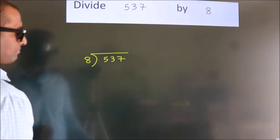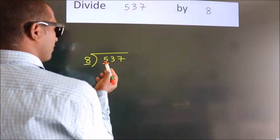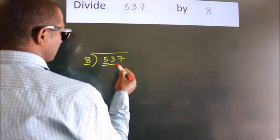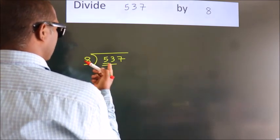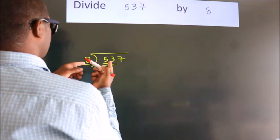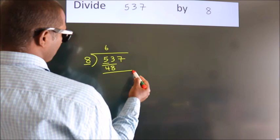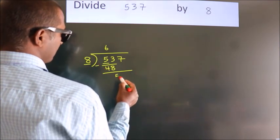Next, here we have 5, here 8. 5 is smaller than 8, so we should take two numbers: 53. A number close to 53 in the 8 table is 8 times 6 equals 48. Now we should subtract. We get 5.